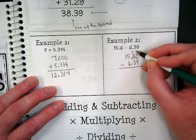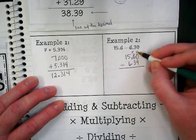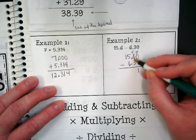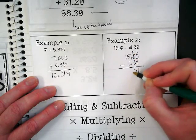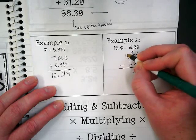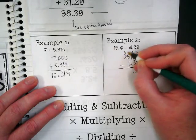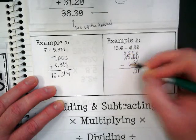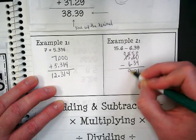So we're going to change this to a 5 and make that 10 when we borrow. 10 minus 9 is 1. 5 minus 3 is 2. We have to borrow again up here. And that's going to be a 0. And this is now 15. 15 minus 6 would be 9.